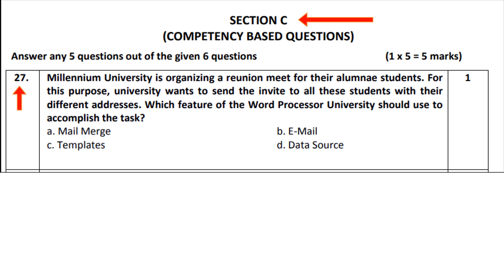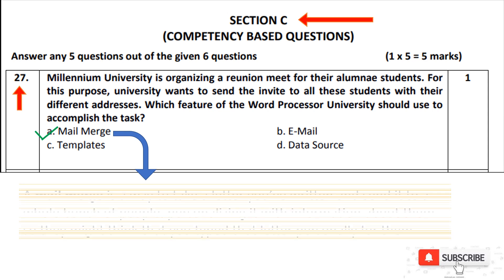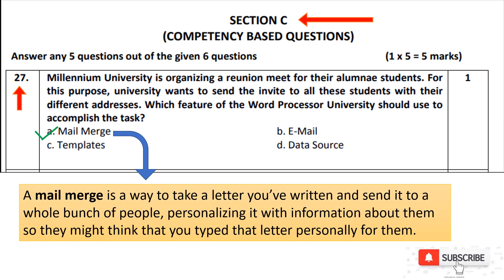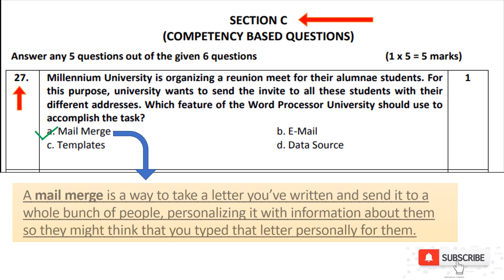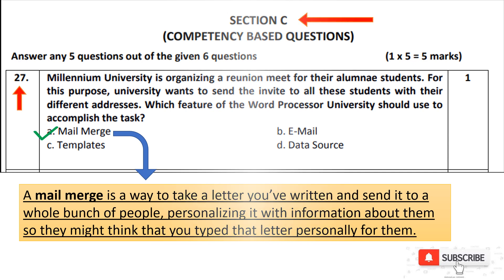Section C is the competency-based question. Question number 27: Millennium University is organizing a reunion meeting for alumni students. The university has to send a mail to each student. Mail Merge is the option in which we can send one letter to a bunch of people — we type it once and it sends to everyone. So the answer is option number A, Mail Merge. In the word processor, Mail Merge is a feature used to send one document to many people.